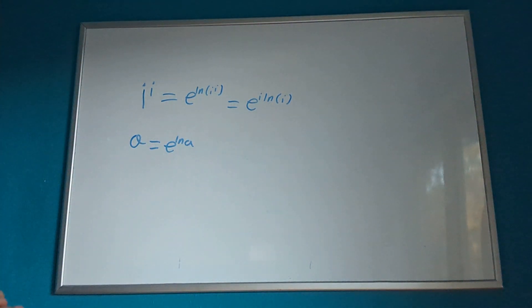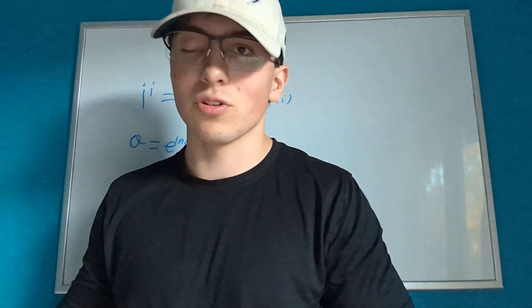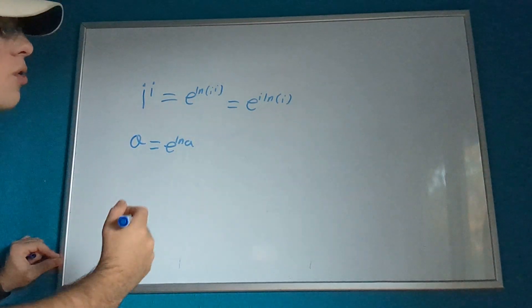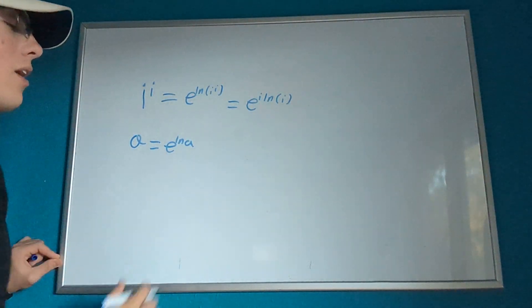We could try using Euler's formula here, except we'd run into an issue where we would have cosine of natural log of i, and that's going to be a whole mess. But what we can do is use Euler's formula to figure out what else i equals.